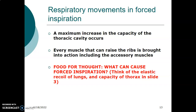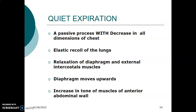The respiratory movements in forced inspiration involve pump handle, bucket handle, and vertical diameter, all increasing the volume of the thoracic cavity. Every muscle that raises the rib is brought into action, including the accessory muscles. During quiet expiration, it is a passive process with decrease in dimensions of the chest. You reduce all these dimensions, increase the pressure in the thoracic cavity so it becomes more than atmospheric pressure. Together with the elastic recoil of the lungs, this air at high pressure is pumped out in expiration. Expiration also involves relaxation of the diaphragm.